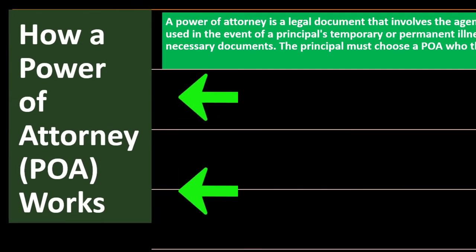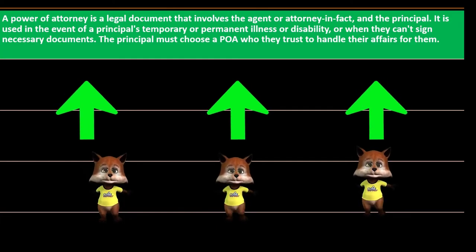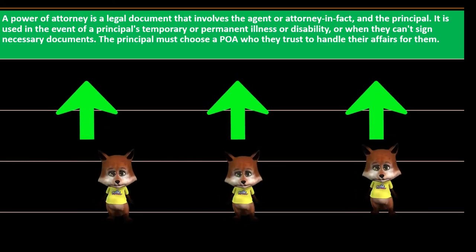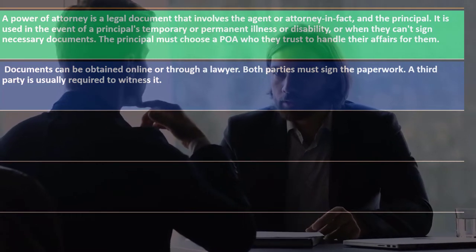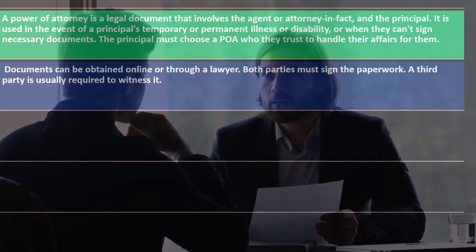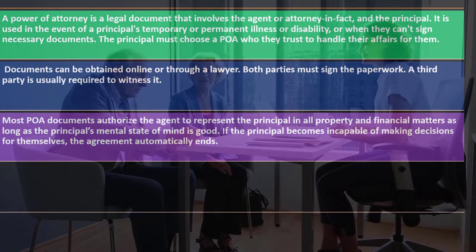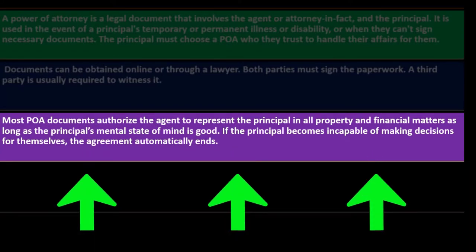A power of attorney is a legal document that involves the agent or attorney-in-fact and the principal. It is used in the event of a principal's temporary or permanent illness or disability, or when they can't sign necessary documents. The principal must choose a POA who they trust to handle their affairs. Documents can be obtained online or through a lawyer; both parties must sign the paperwork, and a third party is usually required to witness it.